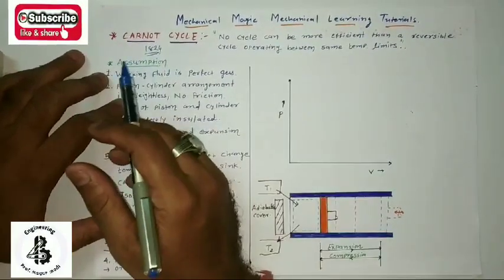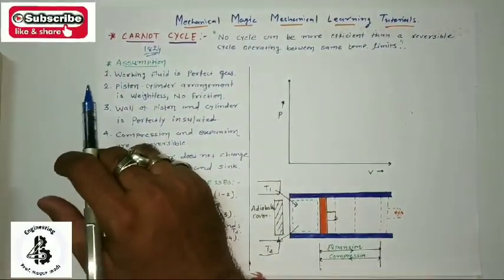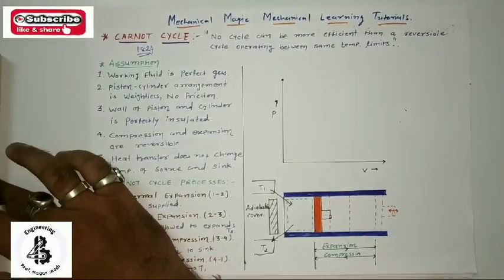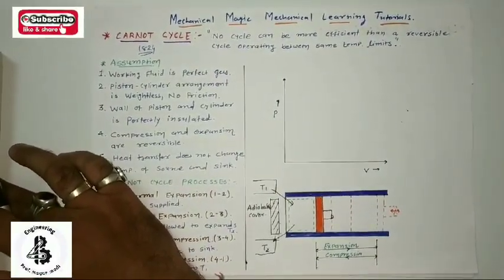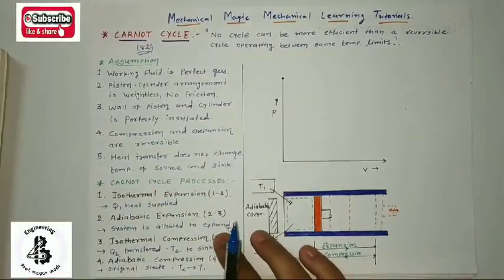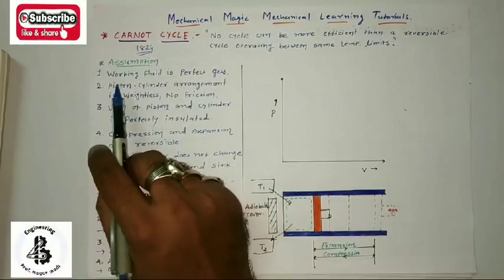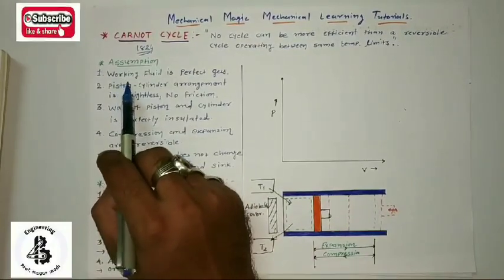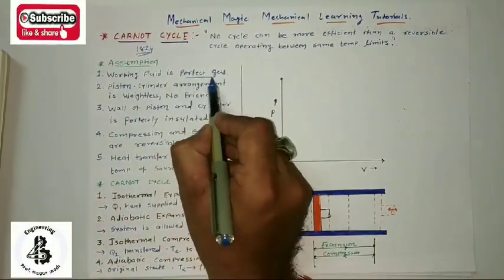During a Carnot cycle, some assumptions are made behind the theory. Let us see the different assumptions that take place in a Carnot cycle. First, the working fluid is considered as a perfect gas.